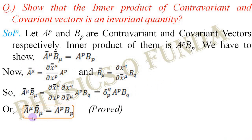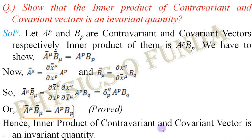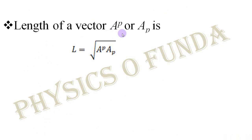This clearly shows the form of the inner product between a contravariant vector A and a covariant vector B remains unchanged in both barred and unbarred coordinate systems — meaning the inner product is an invariant quantity. Now we have to see what is the length of a vector A^p or A_p, in either contravariant or covariant form. The length is given by l = √(A^p A_p), where the term within the square root is the inner product of the vector A between its contravariant and covariant forms.